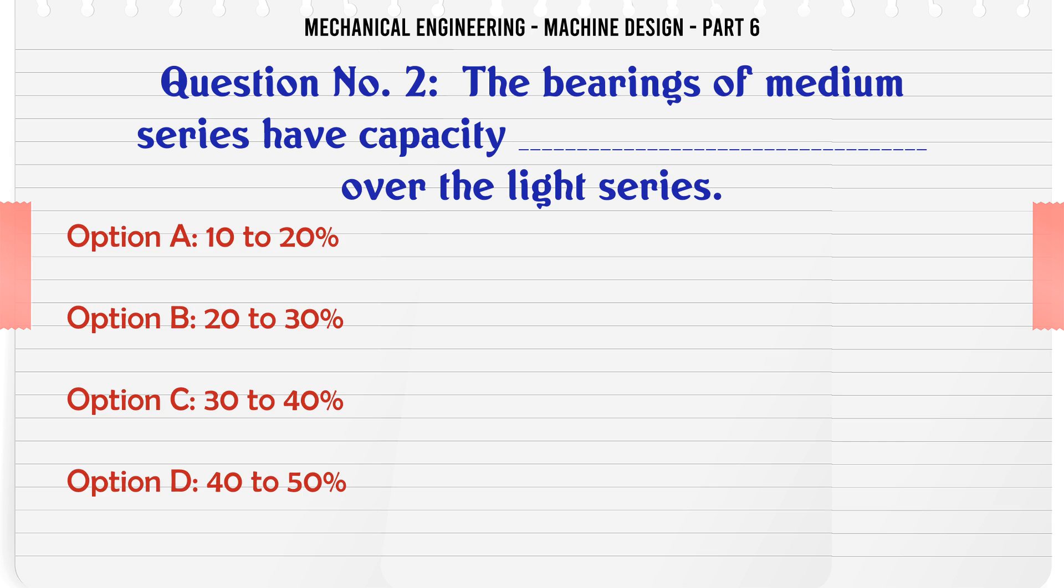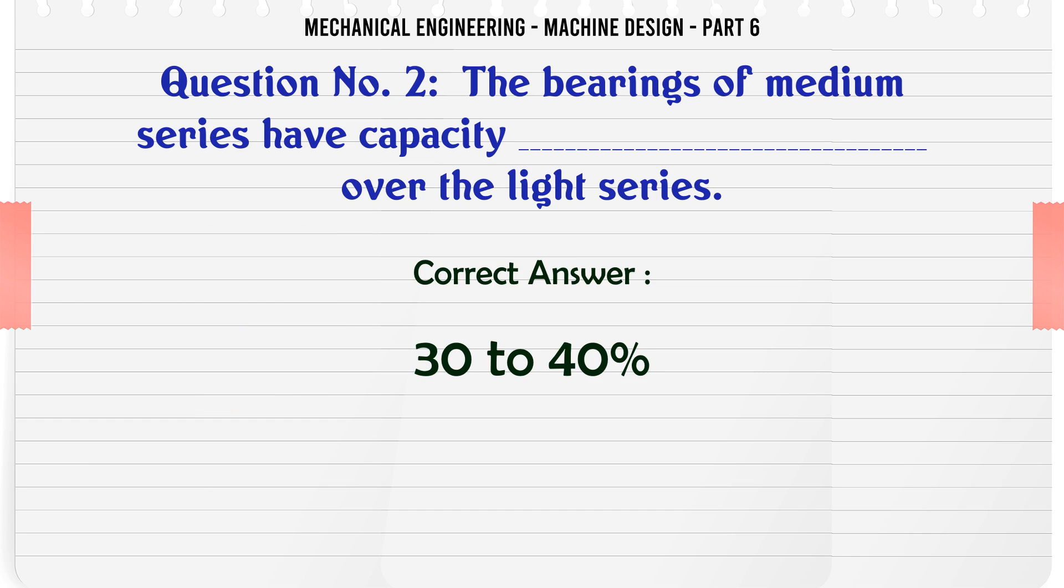The bearings of medium series have capacity over the light series. A) 10 to 20, B) 20 to 30, C) 30 to 40, D) 40 to 50. The correct answer is 30 to 40.